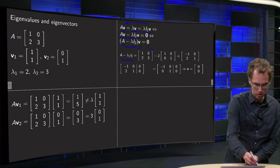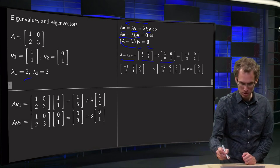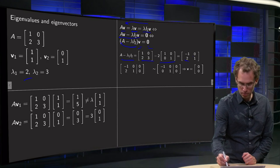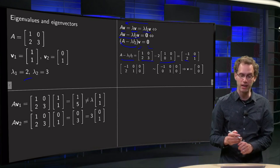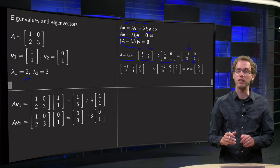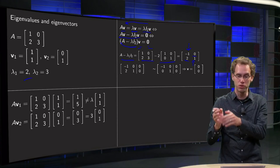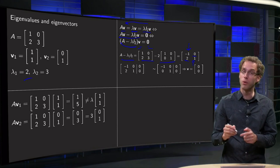So first you compute A minus lambda times I2. For your first lambda, you take 2. So you have A minus 2 times I2, which yields the 2 and the 0 over here remain the same. You're only doing something on the diagonal. And then you do 1 minus 2 equals -1, and 3 minus 2 equals 1.